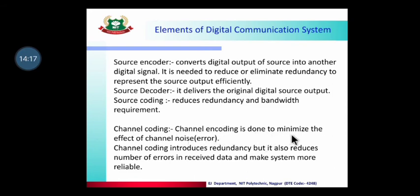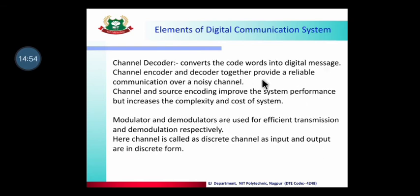Channel encoding minimizes errors. For example, if a wire breaks in a system, the signal is lost and we cannot get proper information — like incorrect sound or picture. The purpose of channel encoding is to add extra bits so that noise is not destructive to the signal. The channel decoder at the receiver removes those extra bits and recovers the original sound, picture, or information at the destination.